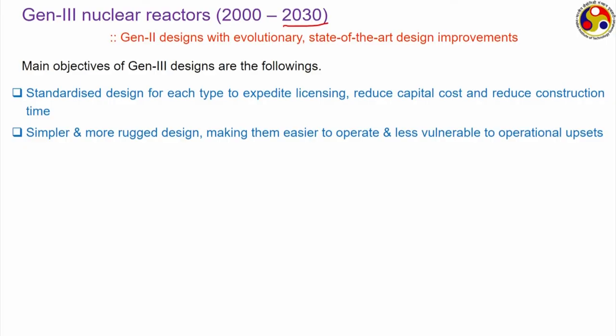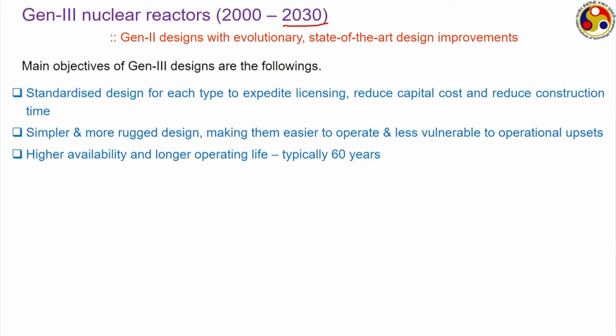Several factors are considered in generation 3 designs. First, standardized designs for each type to expedite licensing, reduce capital cost, and reduce construction time — reduction in capital cost and construction time are most important to attract investors, and if some kind of standard design is followed licensing would be much easier. Second, simpler and more rugged designs making them easier to operate and less vulnerable to operational upsets. Third, higher availability and longer operating life — 40 years for generation 2, at least 60 years for generation 3.